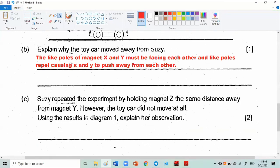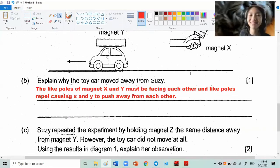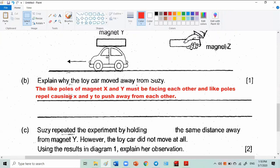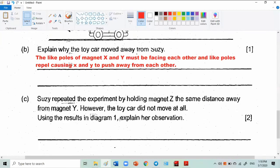She repeats the experiment by holding magnet Z the same distance away from magnet Y. However, the toy car did not move at all. Use your result in diagram one to explain.